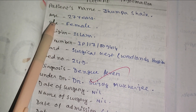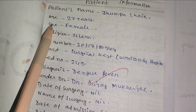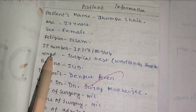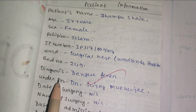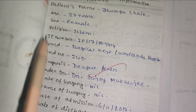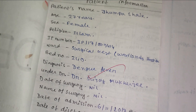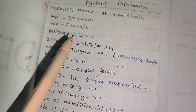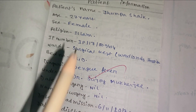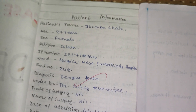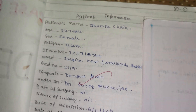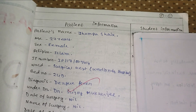The patient information includes patient history: patient name, age, sex, religion, IP number, ward number, bed number, diagnosis, and attending doctor. We need to complete the patient identification data. The other side is for student information.